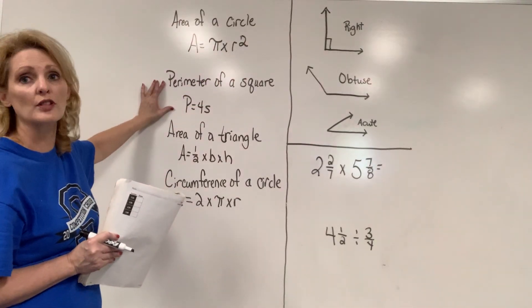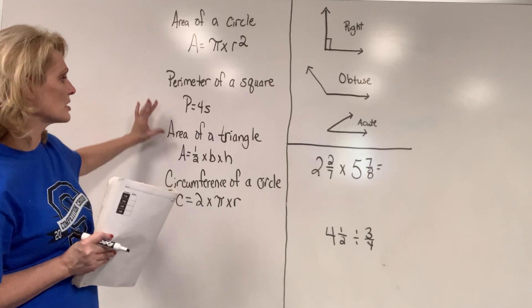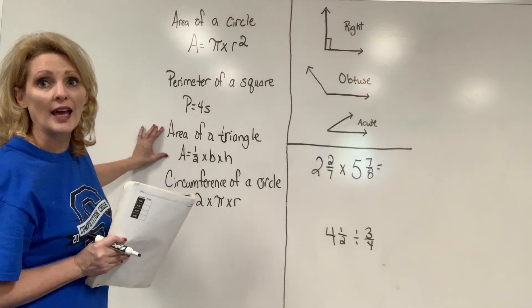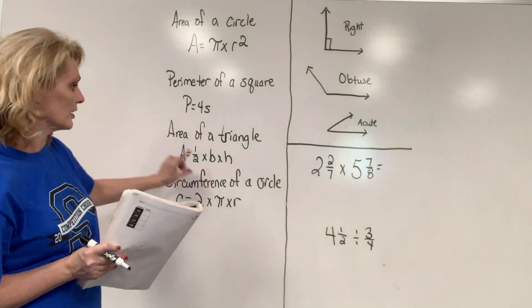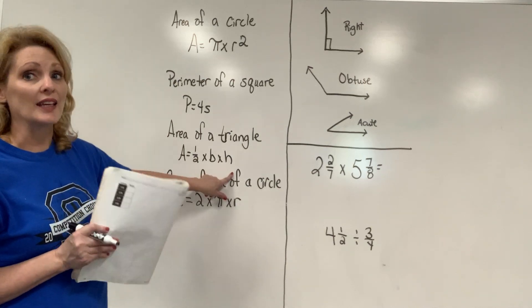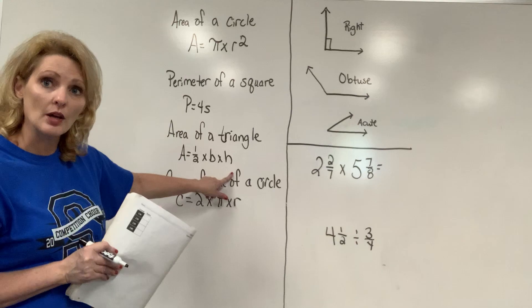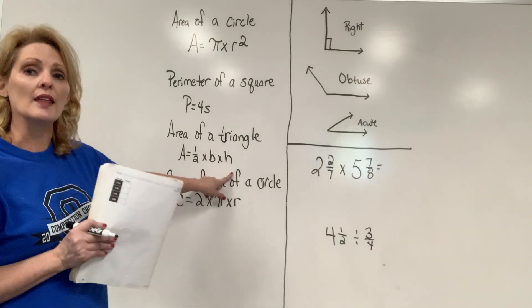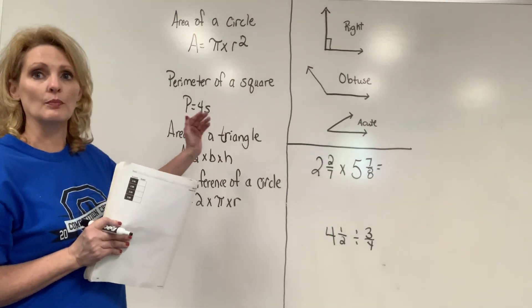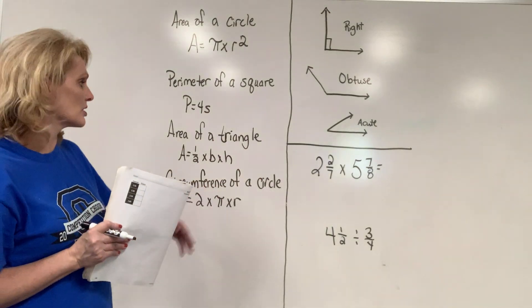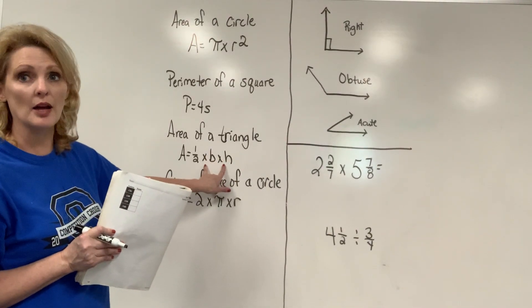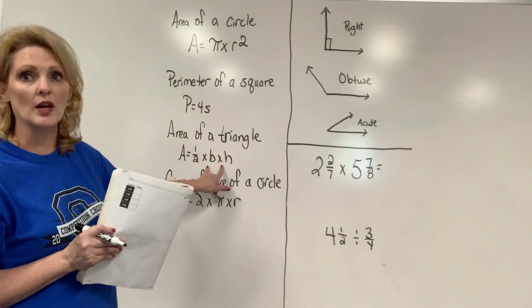Then you have perimeter of a square, p equals 4 times s. You have area of a triangle. If they give you a number that you can take half of, like if your base or your height is an even number, it would be easier to take half of one of those numbers first and then plug it in, whatever that half would be, then plug that other number in and you'll multiply that. So if one of these are even numbers, do that first. If they're not, you'll have to multiply these first, then take half of that.